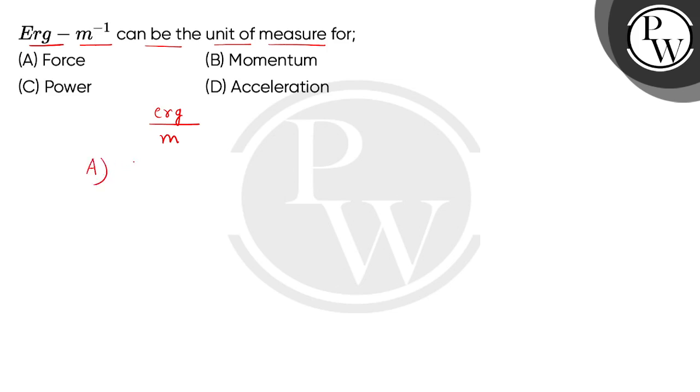So first of all, the entity is force. We can write force as work done divided by the distance. Now if we take CGS unit, that is Erg, and distance - the unit given is meter, so the distance unit is meter. So we can say that the unit given is Erg per meter, that can be used to measure the force. So our answer will be A.